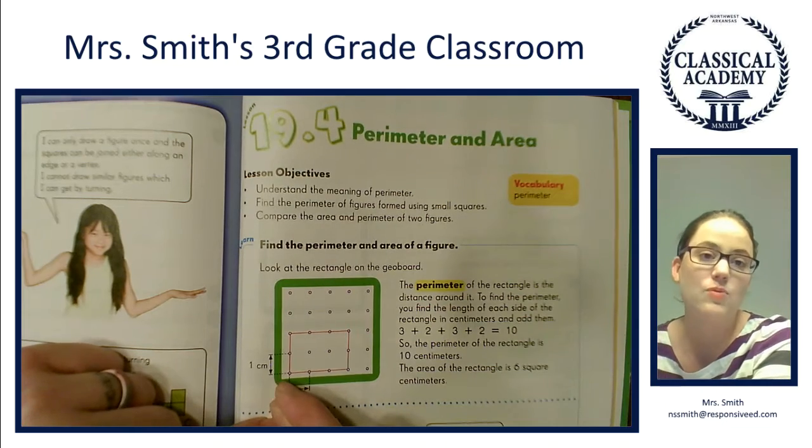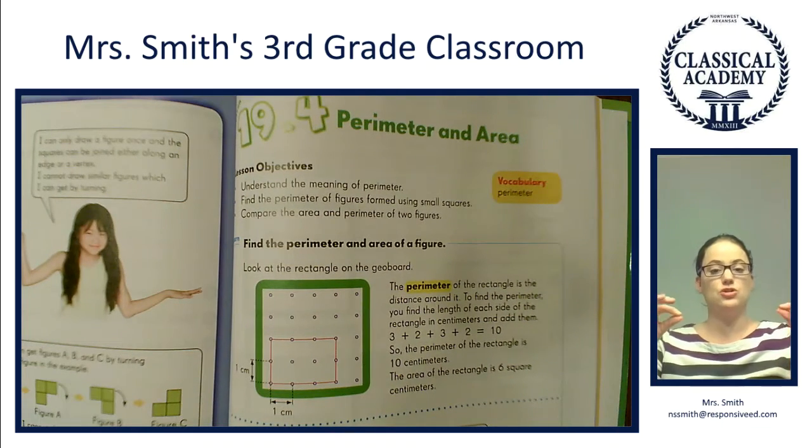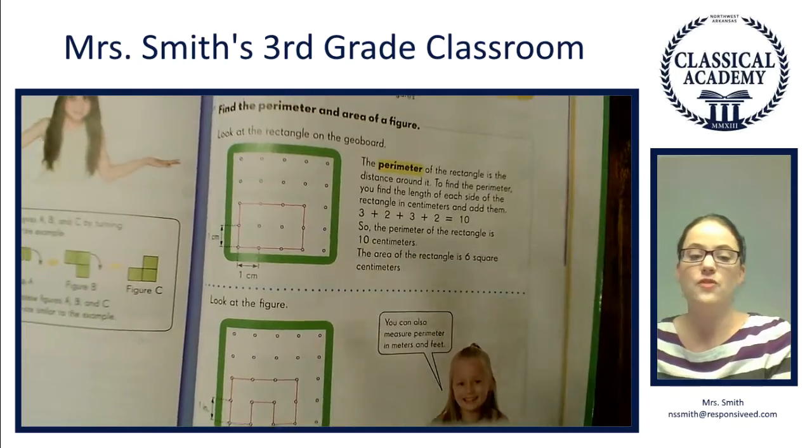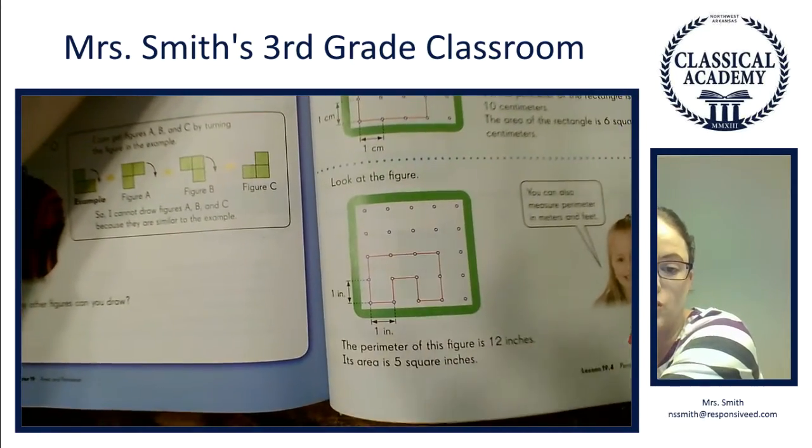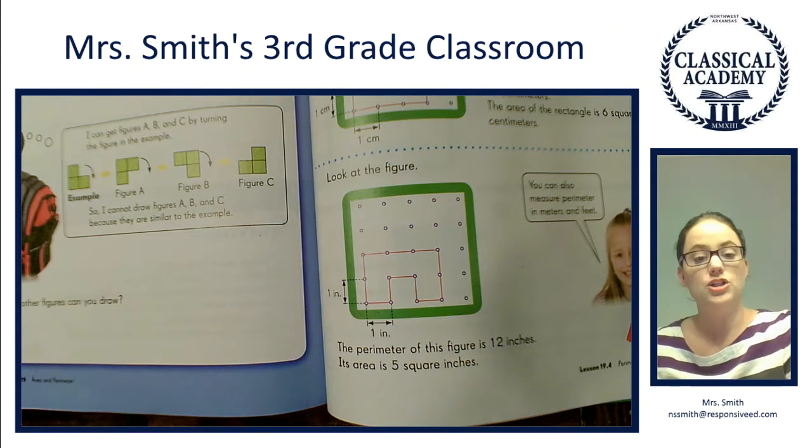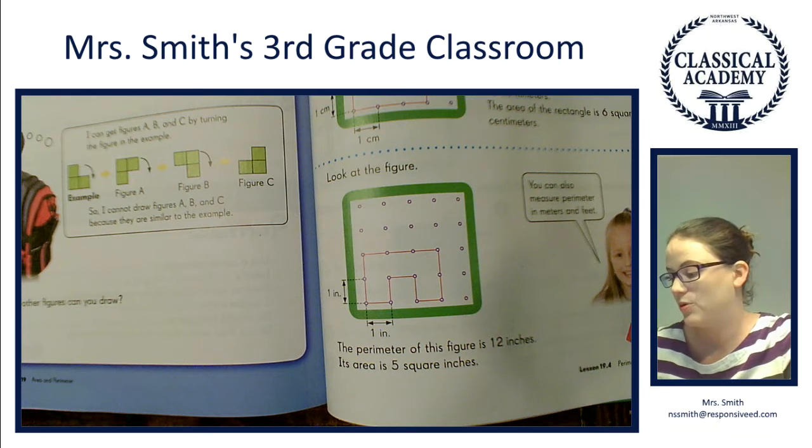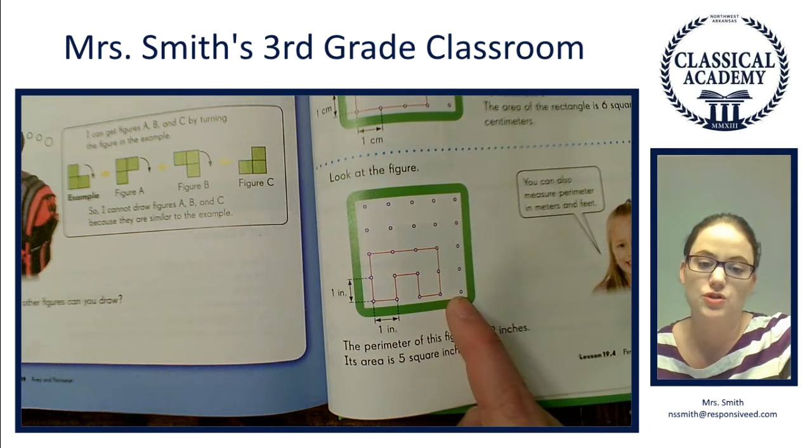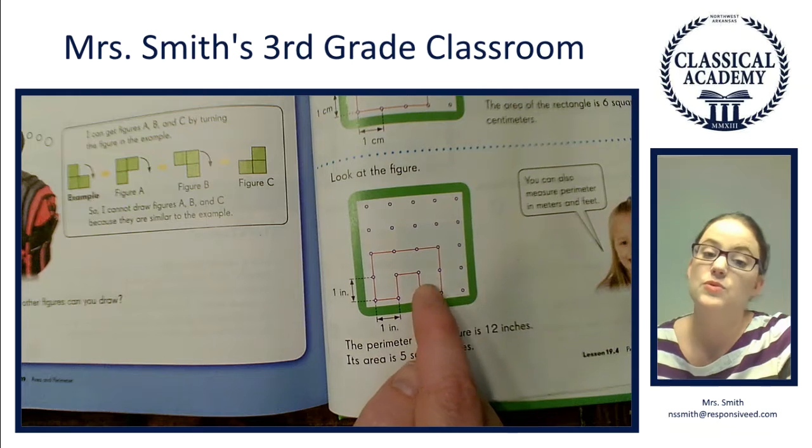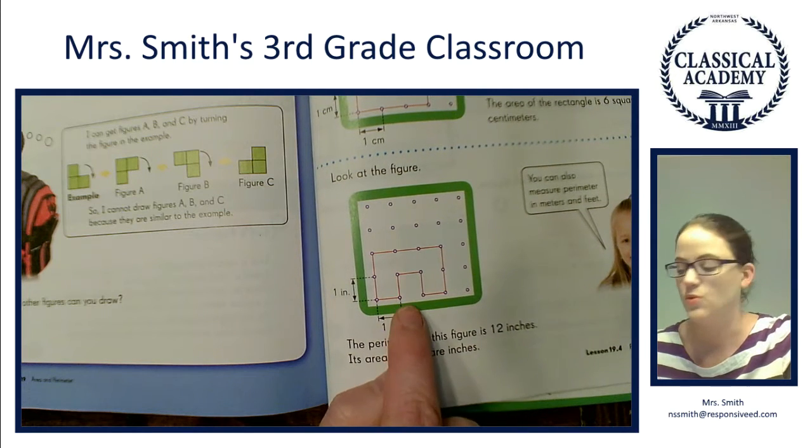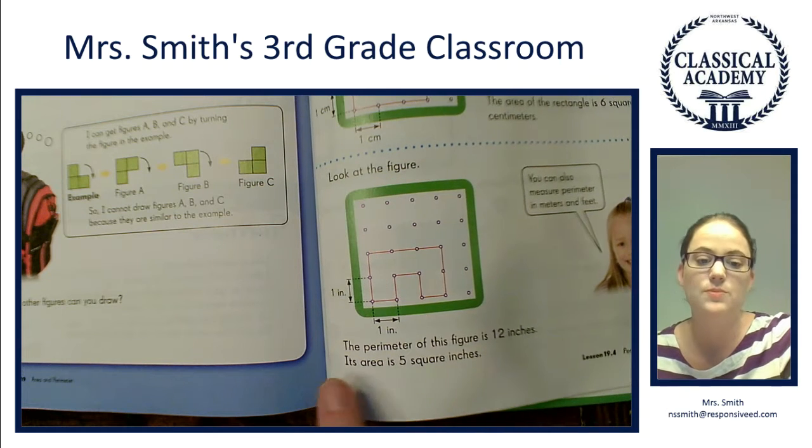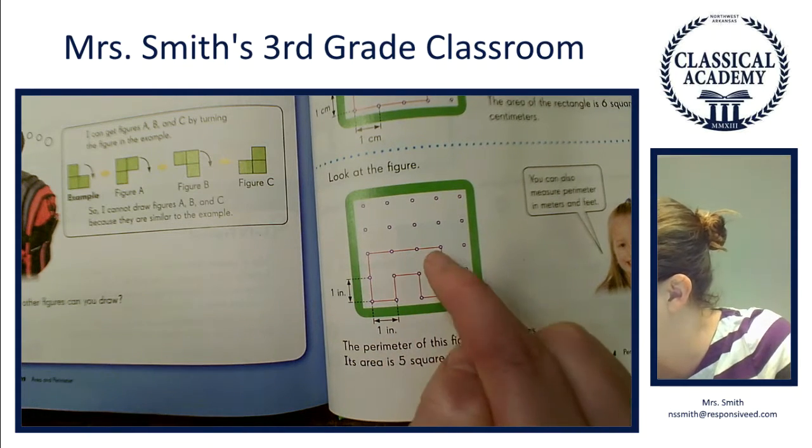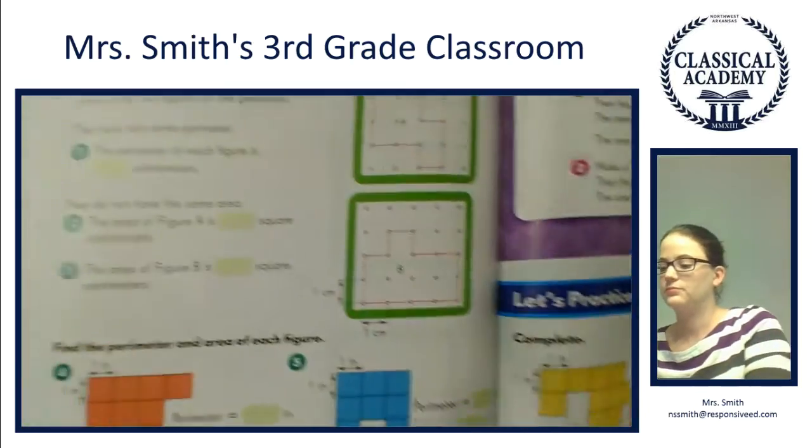Sometimes they're not perfectly even shapes - they're odd shapes like this one. Let's find the perimeter: 1 + 2 is 3, plus 3 is 6, plus 2 is 8, plus 1 is 9, plus 1 is 10, plus 1 is 11, plus 1 is 12. So the perimeter of this big figure is 12 inches, but the area is 5 square inches. How do we know the area? Can we count those squares? Yes - 1, 2, 3, 4, 5.